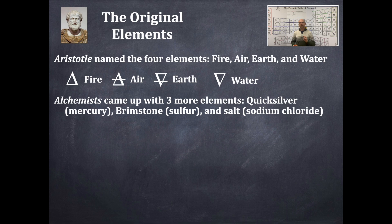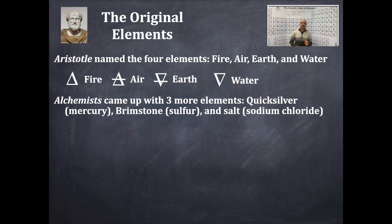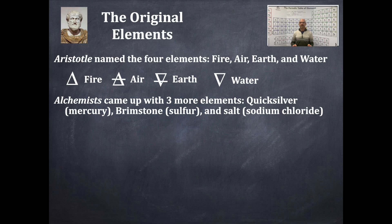Alchemists came up with three more so-called elements. Quicksilver, which is mercury, is most certainly an element — it's right next to gold on the periodic table. Brimstone, which is sulfur, is also a true element. But salt is most certainly not an element; it's a compound composed of sodium and chlorine — sodium chloride.